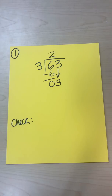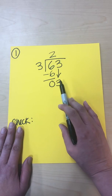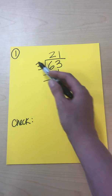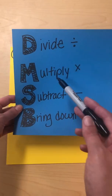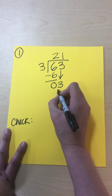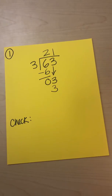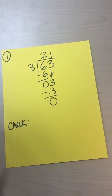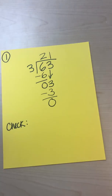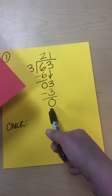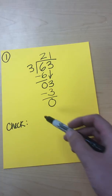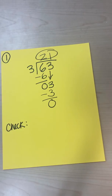We bring down the three to sit with that zero, making 03, then repeat all the steps. First, divide: three goes into three once, so we write 1 above the three. Multiply: three times one is three. Subtract: three minus three is zero. We have no other numbers to bring down, and since the result is zero there is no remainder. Our quotient, or answer, is 21.